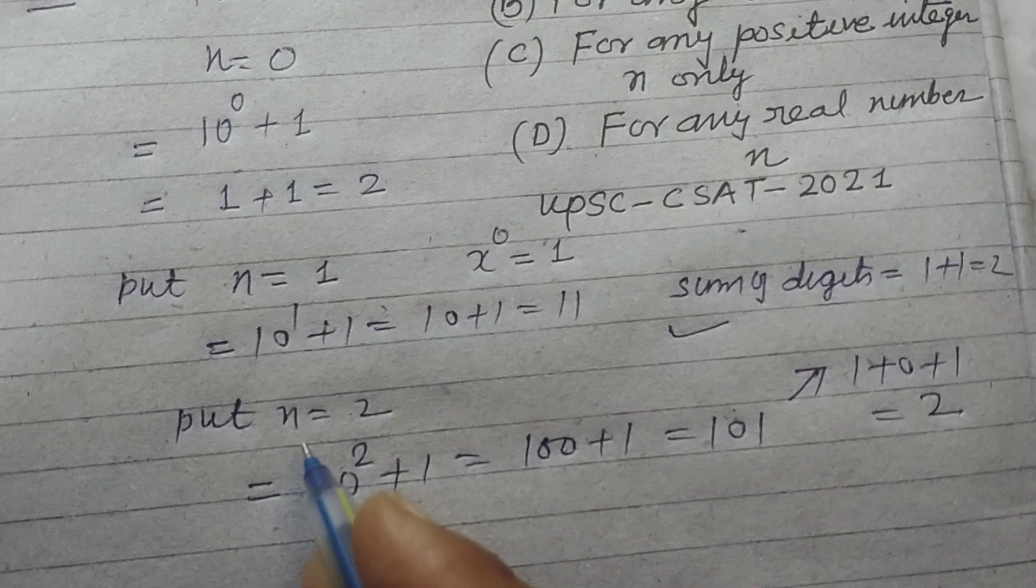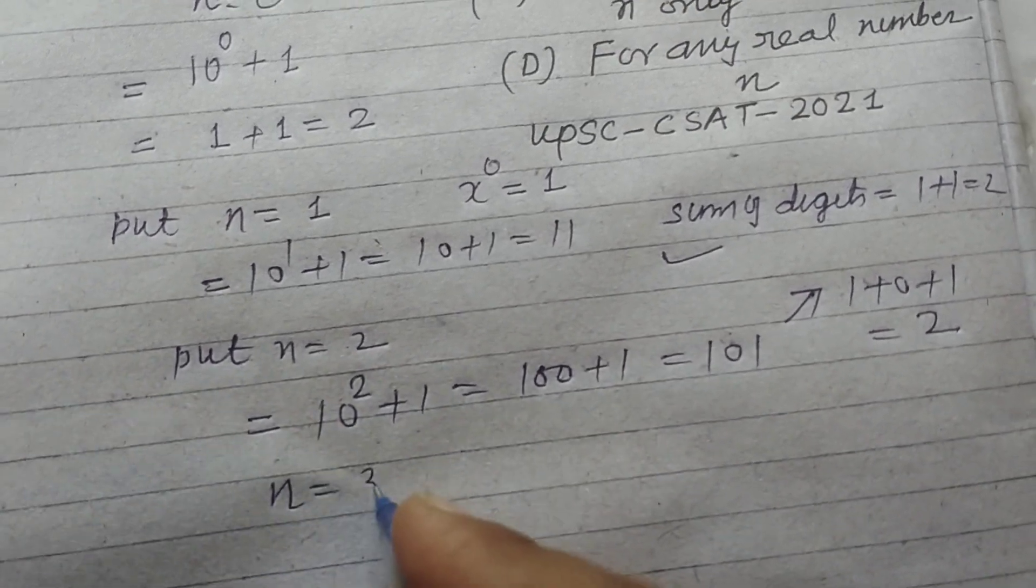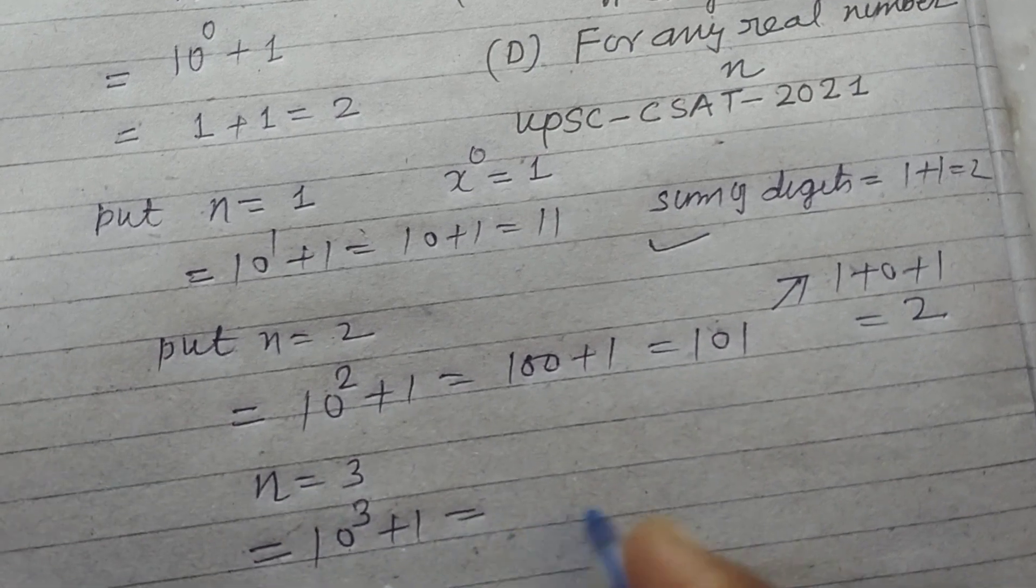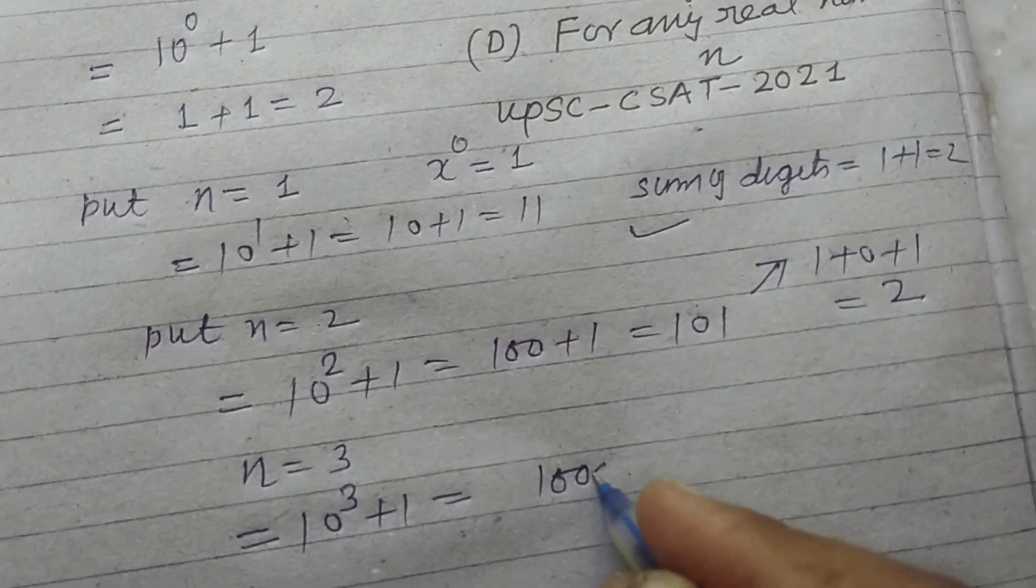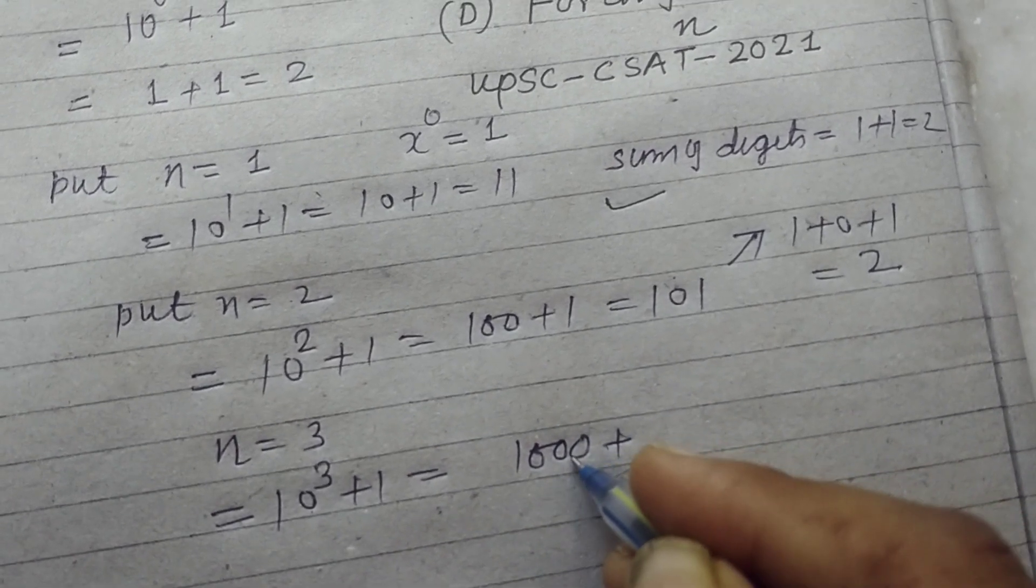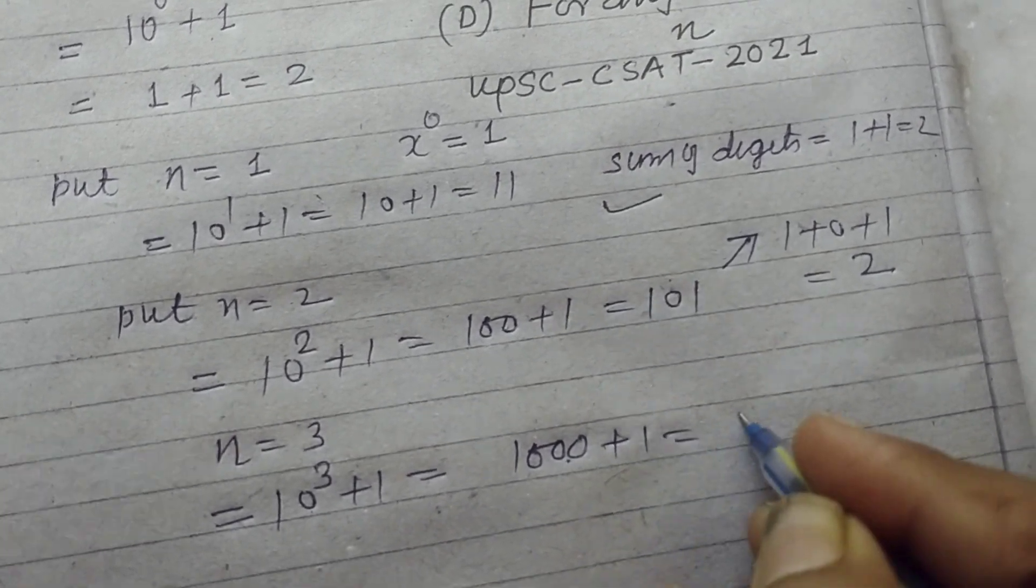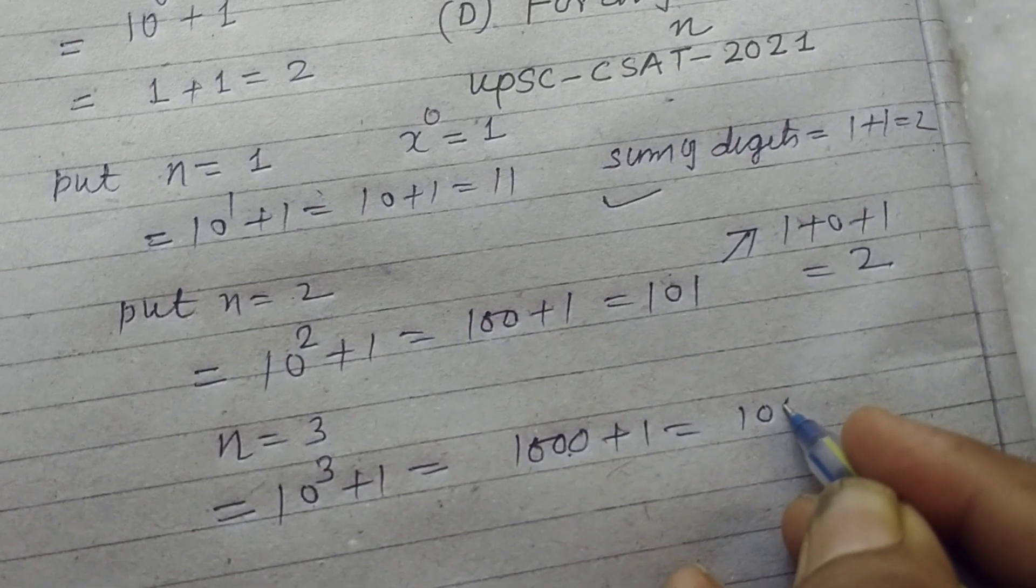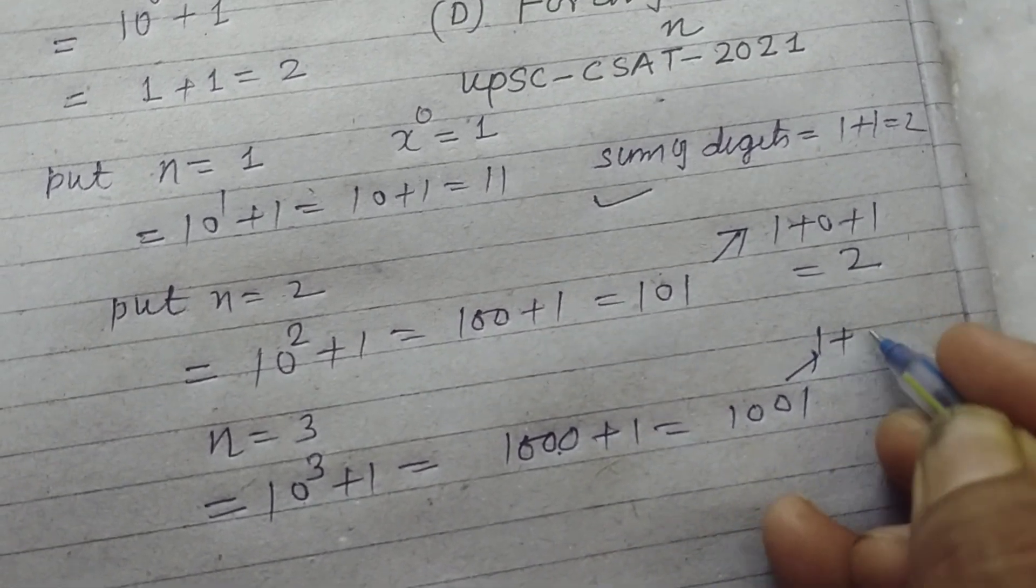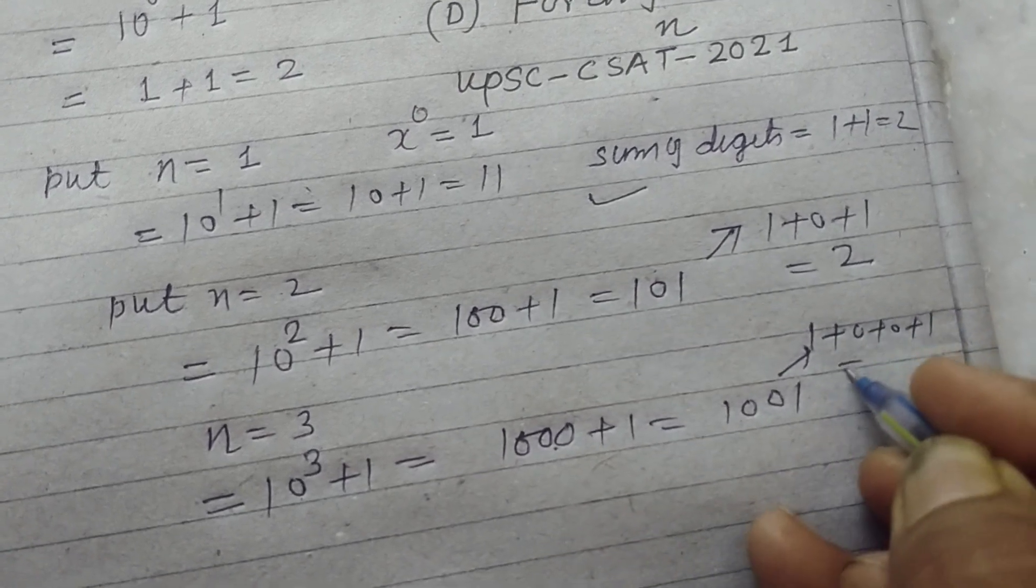The condition is also satisfied. Put n = 3: this will be 10^3 + 1, and 10^3 is 1000 (10 multiplied 3 times: 10 × 10 × 10). So this will be 1000 + 1 = 1001. When we add the digits, 1 + 0 + 0 + 0 + 1 = 2.